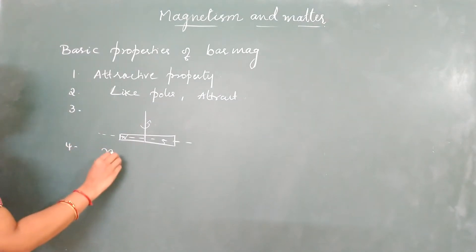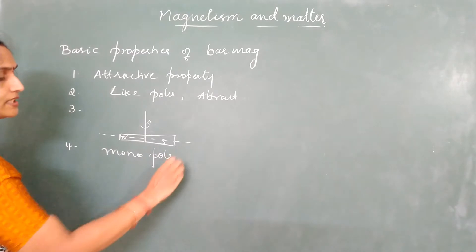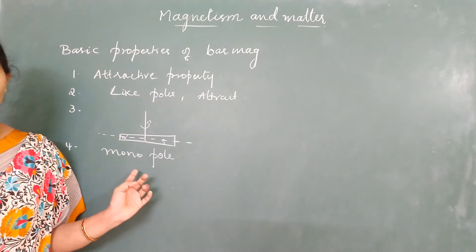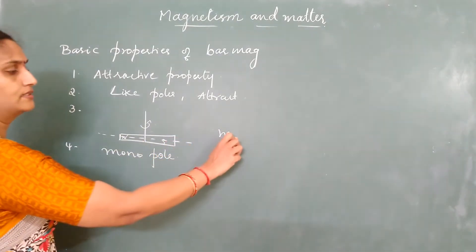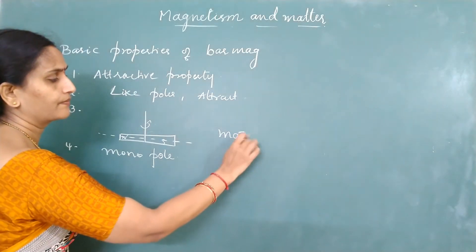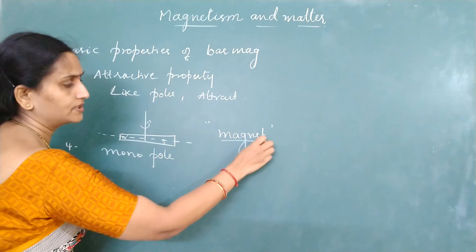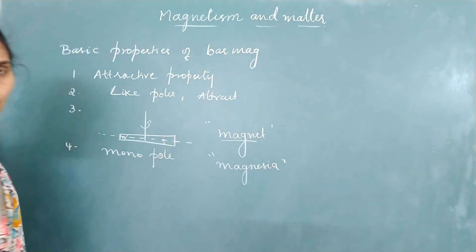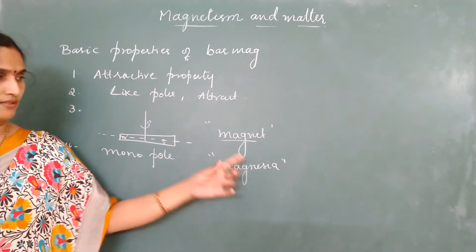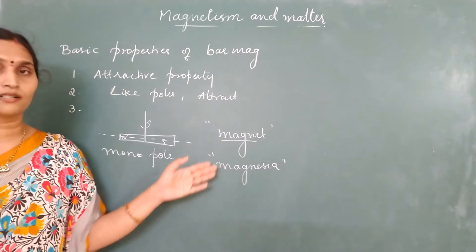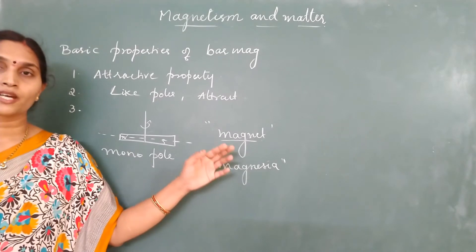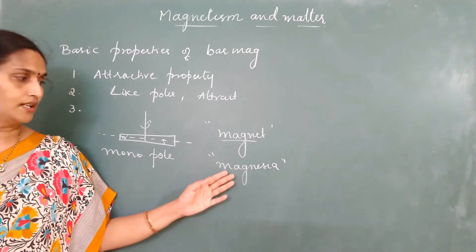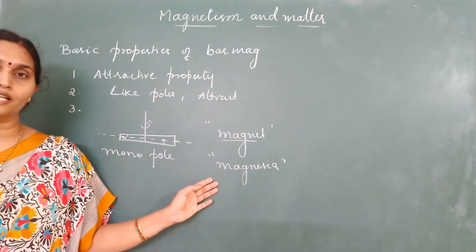One more property is that monopoles do not exist. When you cut a magnet, you again get a north and south pole — an individual north pole or individual south pole will never exist. The word 'magnet' is derived from a Greek island called Magnesia, where abundant sources of magnetic ores were found. Since the ore was discovered in this region, it was named magnet. Magnets were discovered around 600 BC, and the Chinese were using magnetic compass needles while sailing as early as 200 BC.